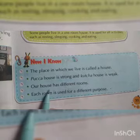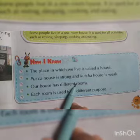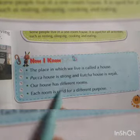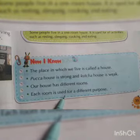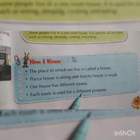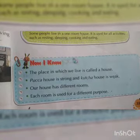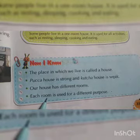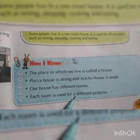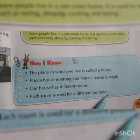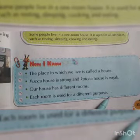Our house has different rooms — हमारे घरों में अलग-अलग कमरे होते हैं। Each room is used for a different purpose — प्रत्येक कमरा अलग-अलग कार्यों के लिए यूज किया जाता है।